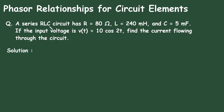Question. A series RLC circuit has R equal to 80 Ohm, L equal to 240 mH and C equal to 5 mF. If the input voltage is V(t) equal to 10 cos(2t), find the current flowing through the circuit.